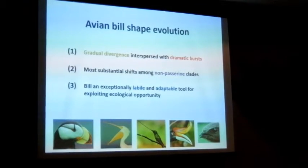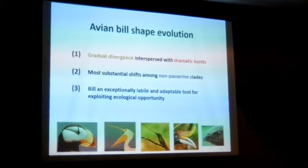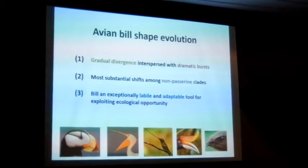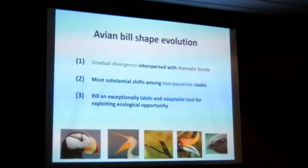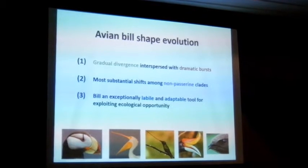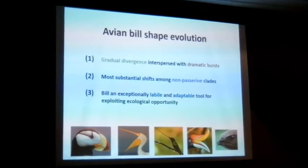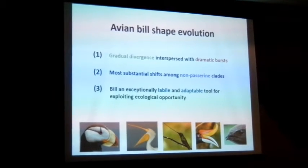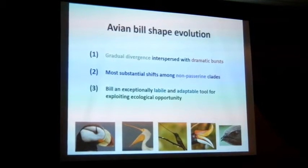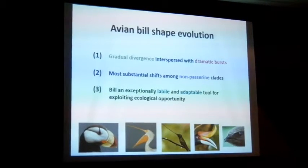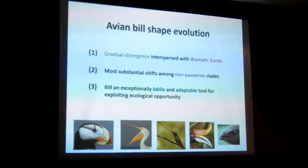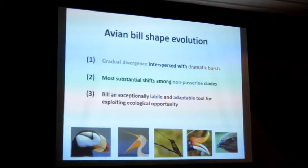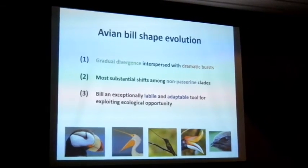Some conclusions — there are three main things I'd like to point out. First, these results suggest that in general avian bill shape evolution can be best understood in terms of a process of gradual divergence punctuated by episodes of rapid evolutionary divergence. However, the most substantial shifts in bill morphology occur within the non-passerine clade, whereas in the passerines this pattern of basal divergence to extreme bill morphologies underlying the base of big radiations tends to be lacking. Finally, these results really do help to cement the view of the avian bill as a hugely adaptable tool that has been repeatedly used by birds to open up new ecological niches and facilitate continued species diversification across their evolutionary history.